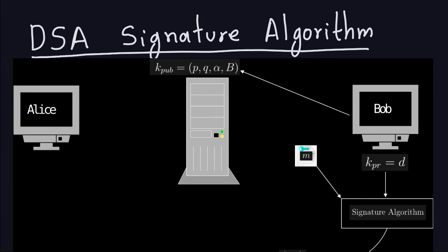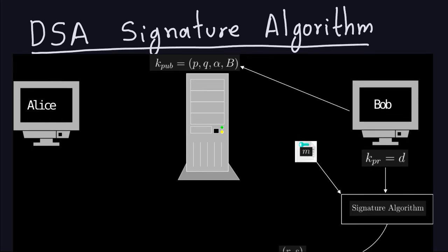Hello and welcome again. In the last video we talked about the generation of the public key and the private key for the DSA signature. Now in this video we'll talk about how to actually perform the signature algorithm for the DSA.